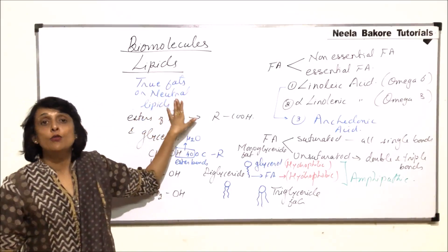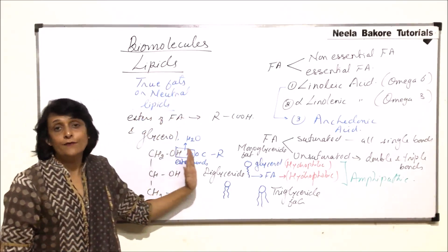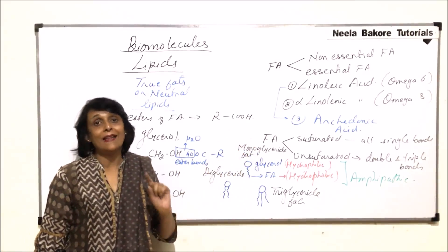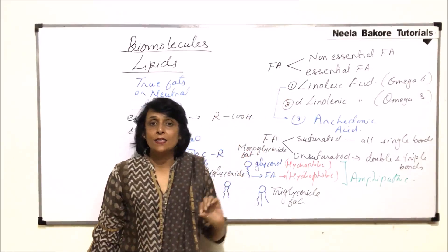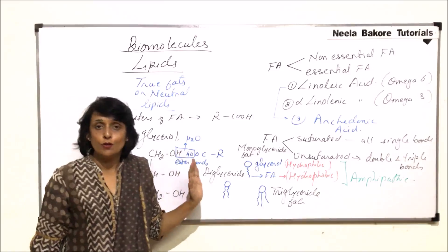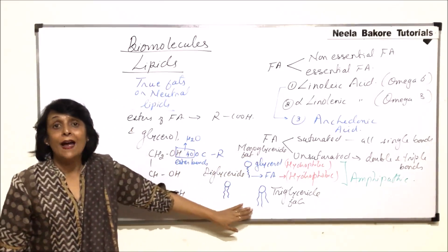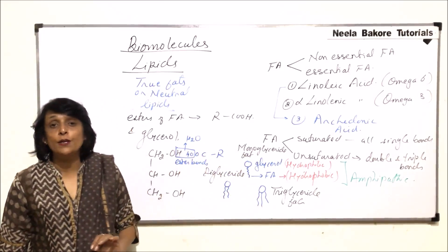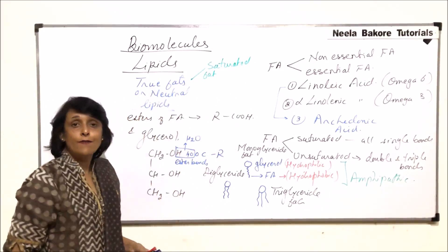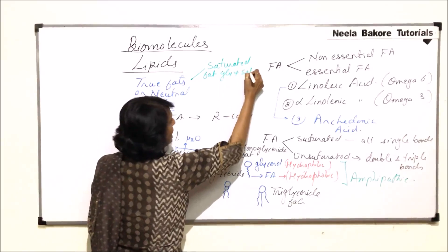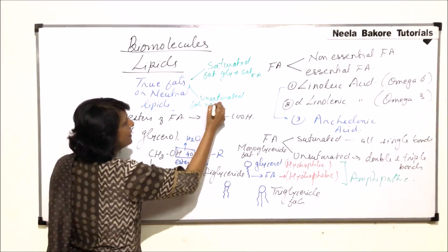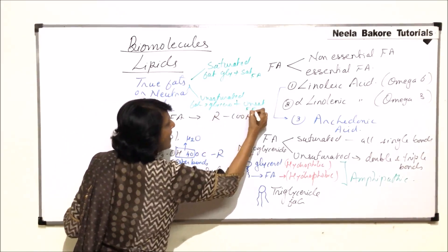When we talk of true fats or neutral fats, we are talking of glycerol and fatty acids. The alcohol is glycerol, and the fatty acids could be saturated or unsaturated and can be essential or non-essential. If the fatty acids are saturated, the fat is termed saturated fat — glycerol plus saturated fatty acids. Unsaturated fat would have glycerol plus unsaturated fatty acids.